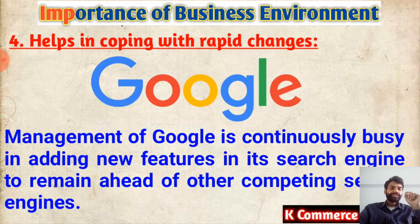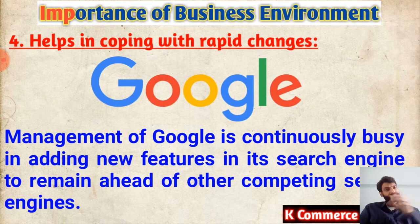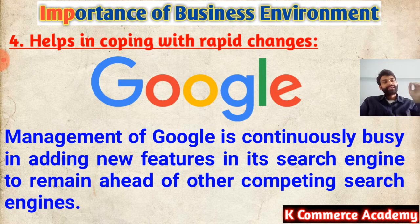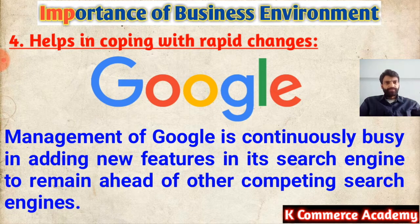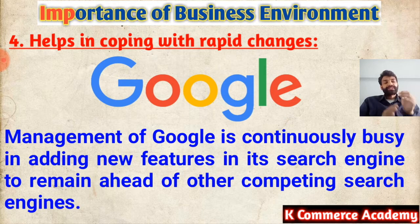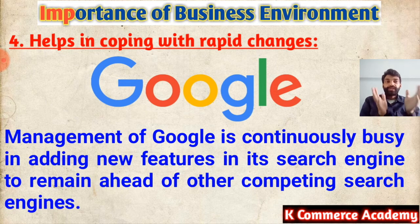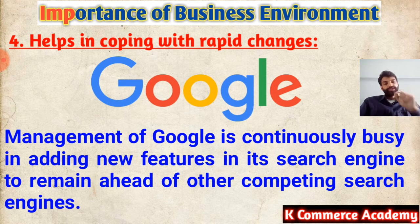For example, we have all heard about Google. Was Google five years ago the same as it is today? Obviously not. The management of Google is continuously busy adding new features to its search engine to remain ahead of other competing search engines. Google is not the only search engine — there are many available — but Google keeps adding new features: voice search, Google Maps, and many others, due to which Google still has the upper hand over competitors. This is called helping in coping with rapid changes.